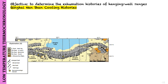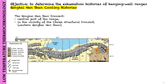To determine the exhumation histories of hanging wall ranges, they collected low-temperature thermochronologic samples along vertical transects on the southern flanks of the Qinghai-Nanshan and Gonghe-Nanshan. The Qinghai-Nanshan transect is located in the central part of the range, and two additional samples were collected in the vicinity of the Chaka structural transect in the western Qinghai-Nanshan.